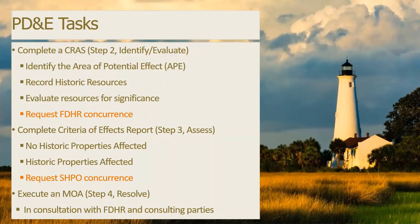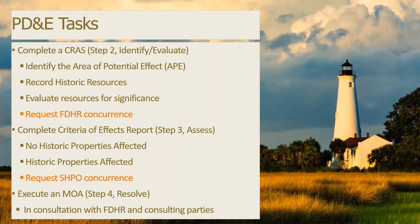As a general task list for project managers during PD&E: our consultant will complete a Cultural Resources Assessment Survey, or CRASS, which will identify cultural resources and evaluate them for significance. That document gets sent to DHR and we request their concurrence. If they concur, we move on. If the CRASS did identify historic properties in the APE, we evaluate the project's effects to those properties in a Criteria of Effects Report — sometimes called a Section 106 Case Study Report. That determines whether our project's effects are adverse or not adverse, and it's also sent to DHR for concurrence. If effects are adverse, we execute an MOA in consultation with DHR and any other consulting parties.